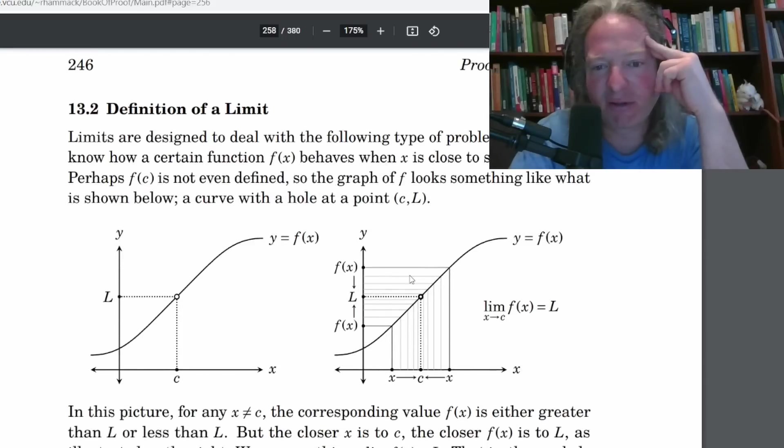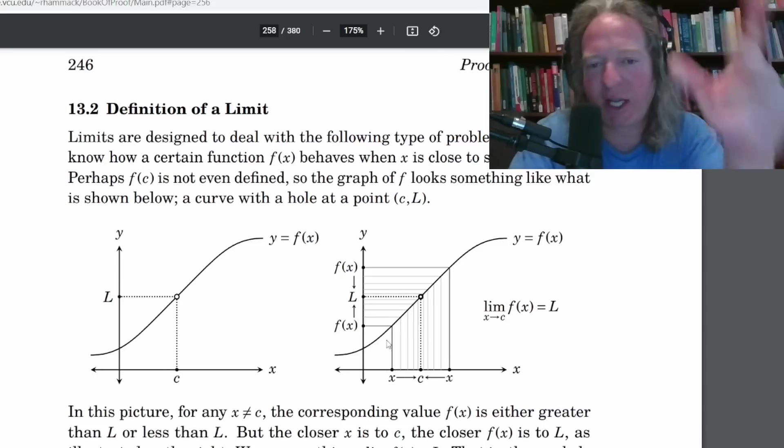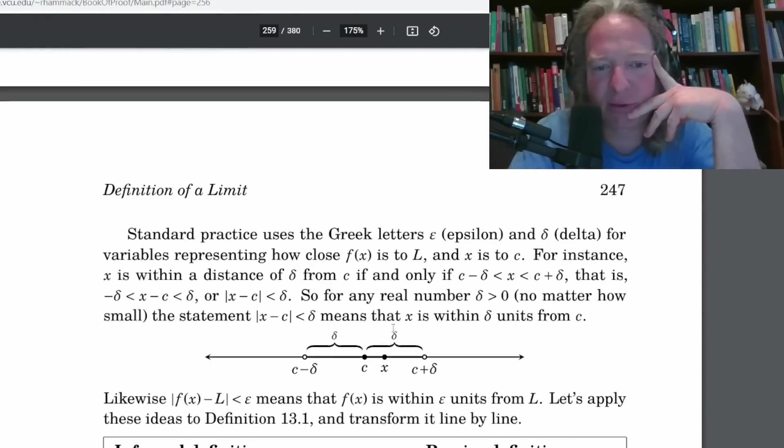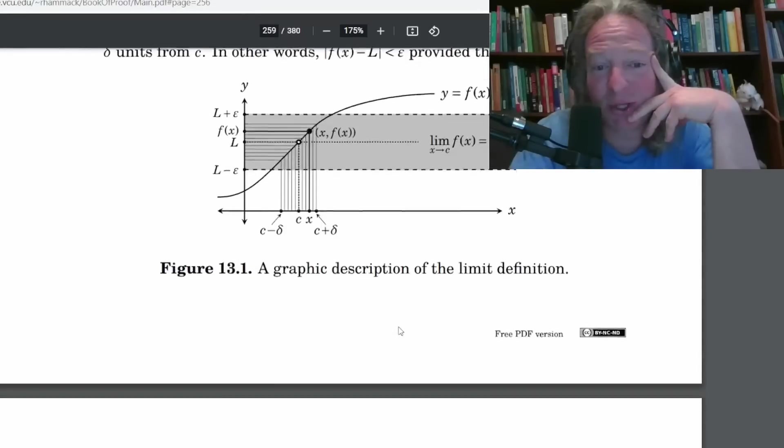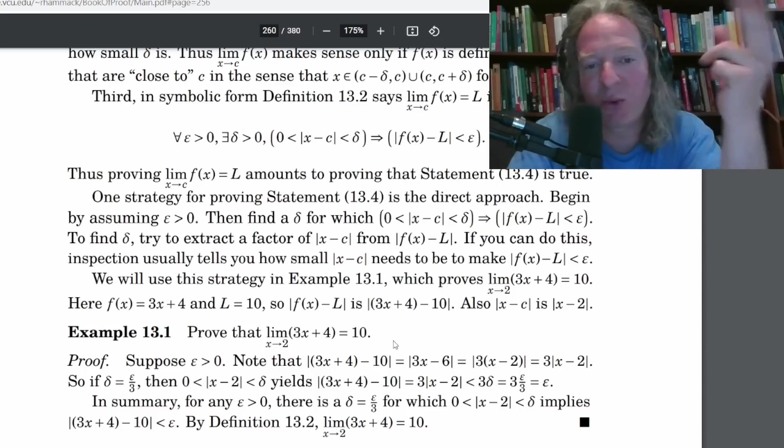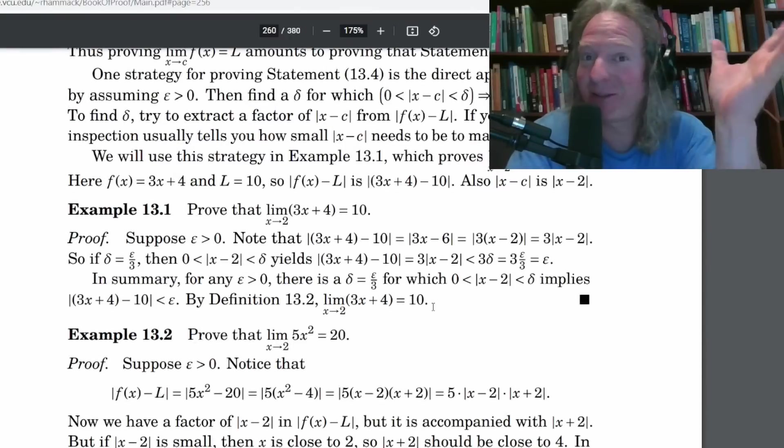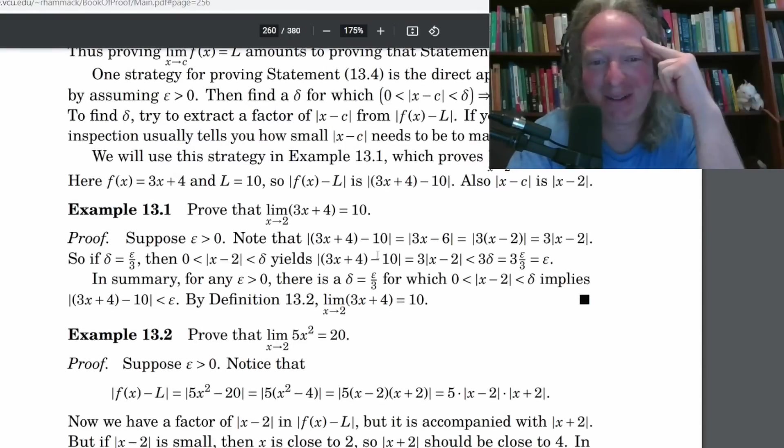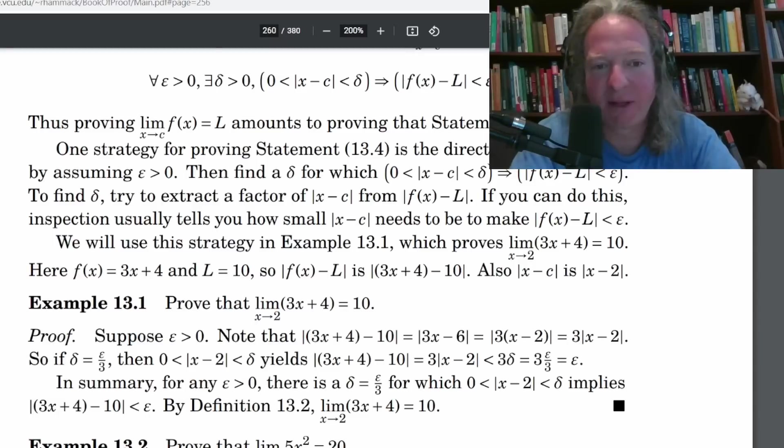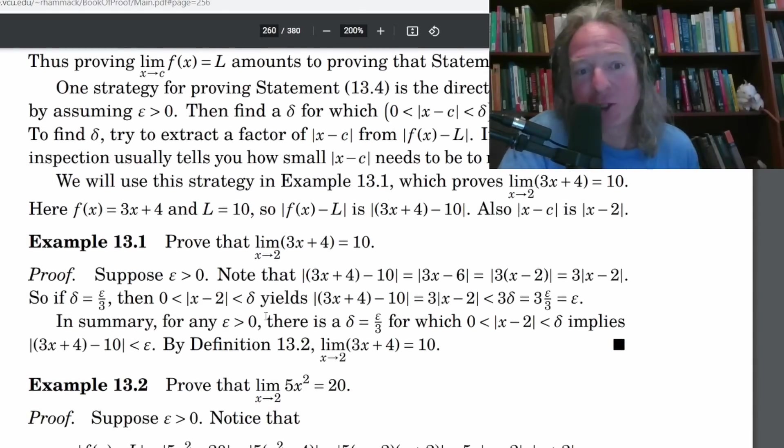So here he talks about single variable calculus. Let's see if we can find a proof here. He talks about the triangle inequality, which is super useful in all of calculus and calculus proofs and mathematics. It's fundamental. Talks about the definition of a limit. That's a familiar picture. If you've ever taken calculus one, you've probably seen this picture. Here's the informal one. Let's see if we can find a proof. So here's a limit proof. Prove that the limit as x approaches 2 of 3x plus 4 equals 10.